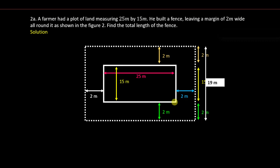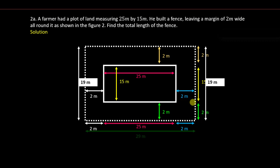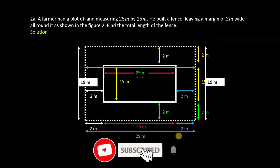This 19 meters is for a rectangle — a rectangle has its opposite sides equal, so we can trace it to the other side and it also gives 19 meters. Now for the length: we trace 2 meters from the boundary on one side, then 25 meters for the inner plot, then another 2 meters on the other side, giving 29 meters. Since opposite sides of a rectangle are equal, the other length side is also 29 meters.